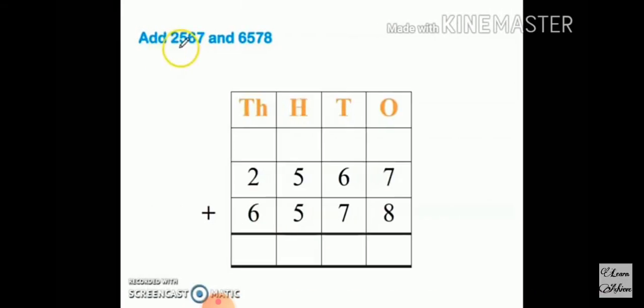Add 2567 plus 6578. Here we go, 2567 add 6578. So rule number one.